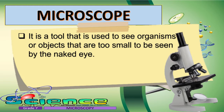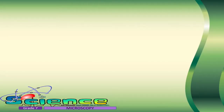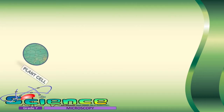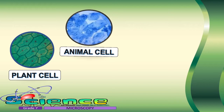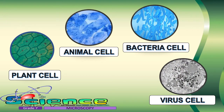A microscope is a tool that is used to see organisms or objects that are too small to be seen by the naked eye. This tool makes small objects look bigger. Some of the tiny objects or organisms that can be seen using a microscope include the plant cell, the animal cell, and microorganisms such as bacteria and viruses.